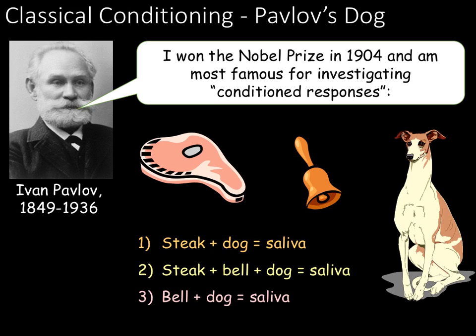The main study you need to know is the one carried out by Pavlov on dogs. Pavlov observed that dogs would salivate every time they saw or smelt food — every time he presented them with steak, the dog would produce saliva. He then began to ring a bell when presenting the food, so the dogs started to associate the neutral stimulus (the bell) with the important stimulus (the steak). He then removed the steak and simply rang the bell, and the dogs would still salivate.